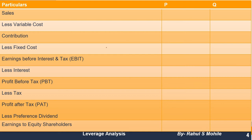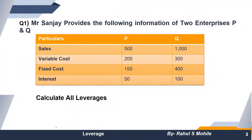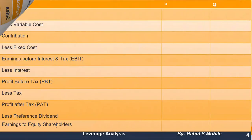Before we start solving, we need to remember this format. This format is similar to what you studied in the marginal costing chapter. Sales minus Variable Cost gives Contribution. Contribution minus Fixed Cost gives EBIT — Earnings Before Interest and Tax. EBIT minus Interest gives PBT — Profit Before Tax. PBT minus Tax gives Profit After Tax, and deducting Preference Dividend gives Earnings to Equity Shareholders.